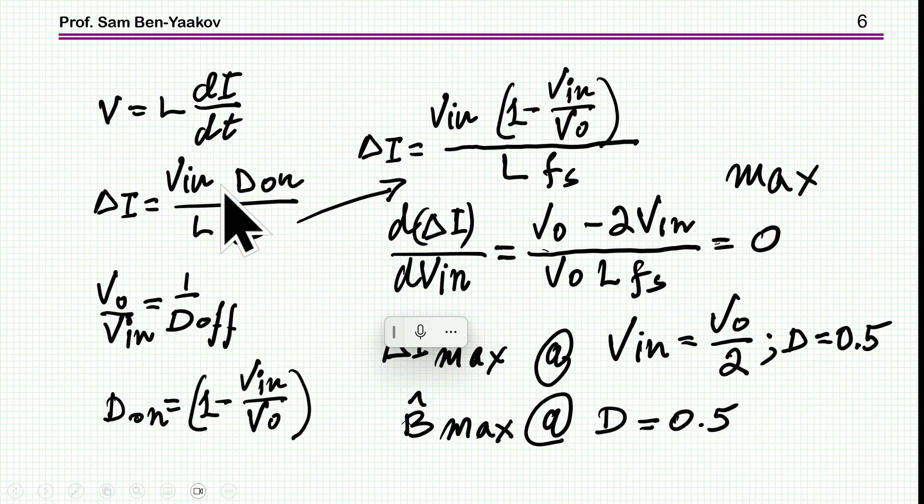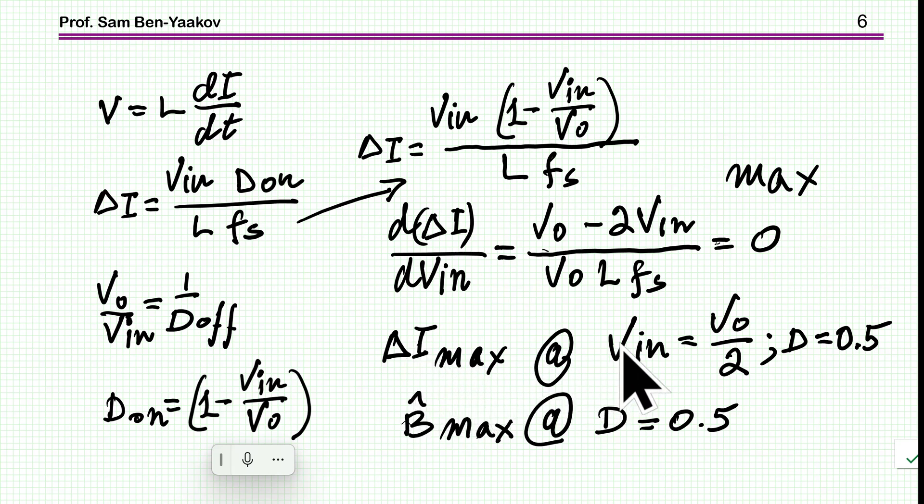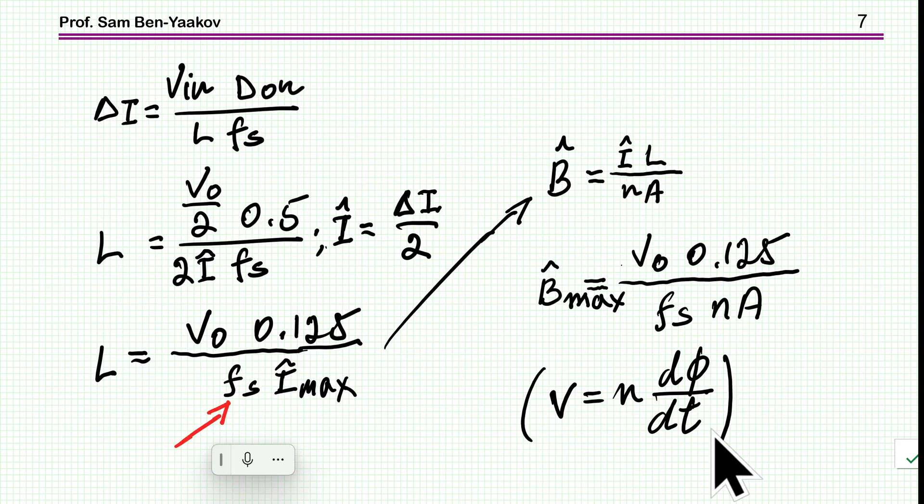Plugging it in, we get this expression for the delta I as a function of V in and V out, which is part of the definition of the duty cycle. To find out the maximum ripple, I'm taking the derivative, equating it to zero, and I'm finding, which is very well known, that the maximum ripple is when the duty cycle is 0.5, when V in is half of V out. V out is fixed because there is a controller that is fixing the output voltage and V in is the rectified voltage. Therefore, the maximum ripple of B will also be at the duty cycle of 0.5.